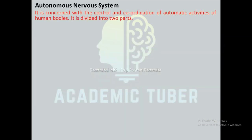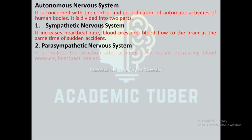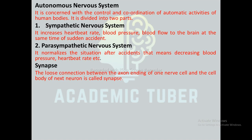The autonomic nervous system is concerned with the control and coordination of automatic activities of the human body. It is divided into two parts: sympathetic and parasympathetic. The sympathetic nervous system prepares the body for extreme and emergency conditions — it increases blood pressure, heartbeat rate, and breathing rate. The parasympathetic nervous system opposes the sympathetic system, decreasing heartbeat rate and blood pressure to bring them back to normal states.